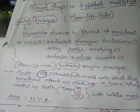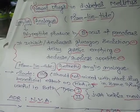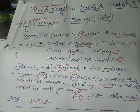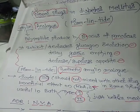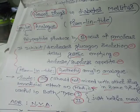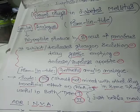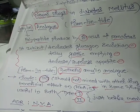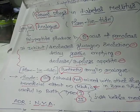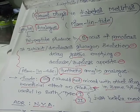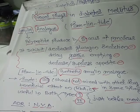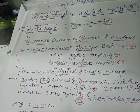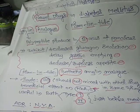The actions of amylin include: inhibiting or decreasing glucagon secretion, delaying gastric emptying, and decreasing or suppressing appetite. By doing so, amylin decreases the blood glucose level — it inhibits glucagon secretion, delays the absorption of glucose by slowing gastric emptying, and suppresses the appetite center.